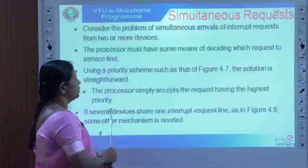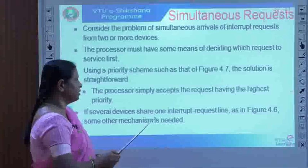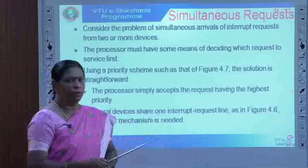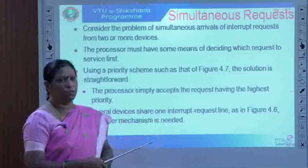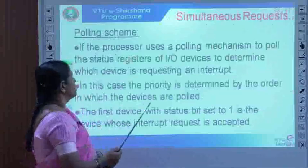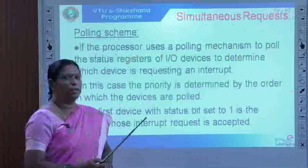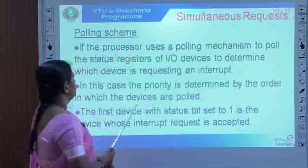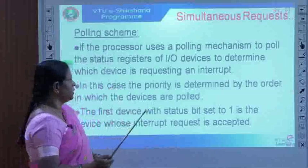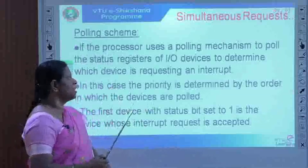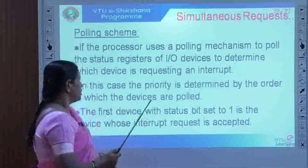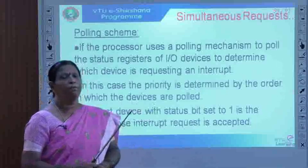But now the question is, if the processor has a single interrupt line — a single interrupt request line as mentioned in figure 4.6 — some other mechanism is needed. Using the concept of a polling scheme, if the processor uses a polling scheme to poll the status of the IO device to determine which device is requesting an interrupt, how does the process of polling work?